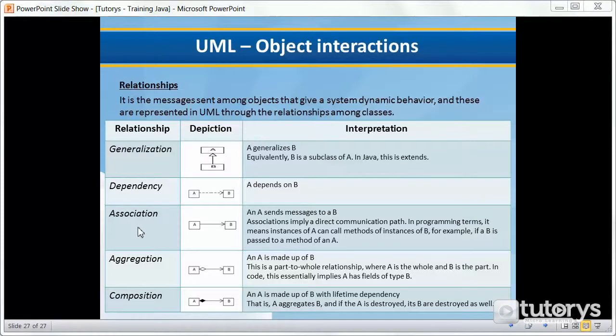Then we have association. An A sends messages to a B. Associations apply a direct communication path. In programming terms, it means instances of A can call methods of instances of B, for example, if a B is passed to a method of an A.